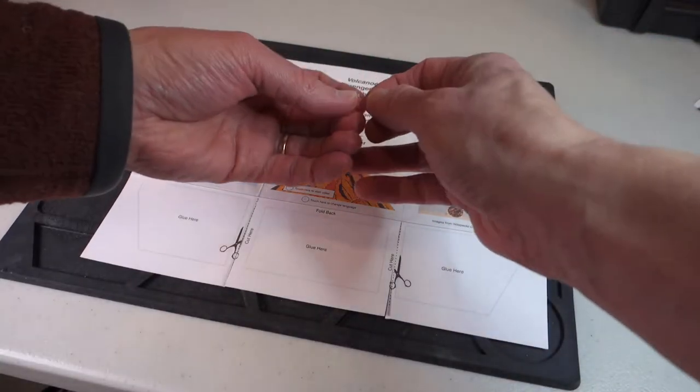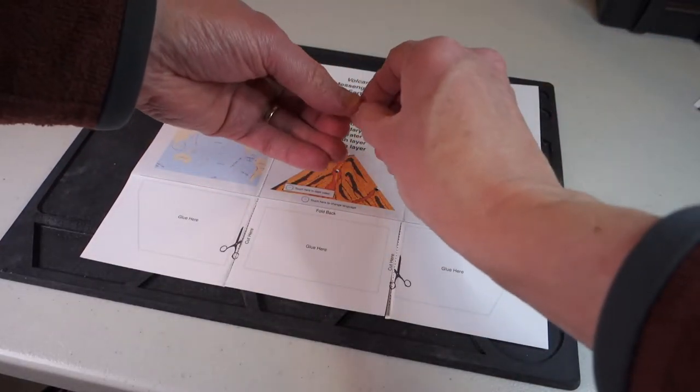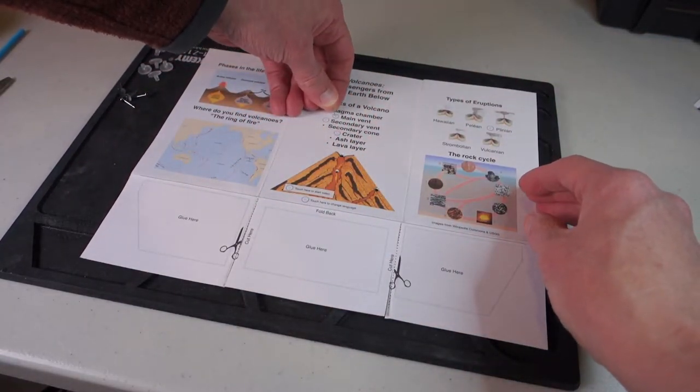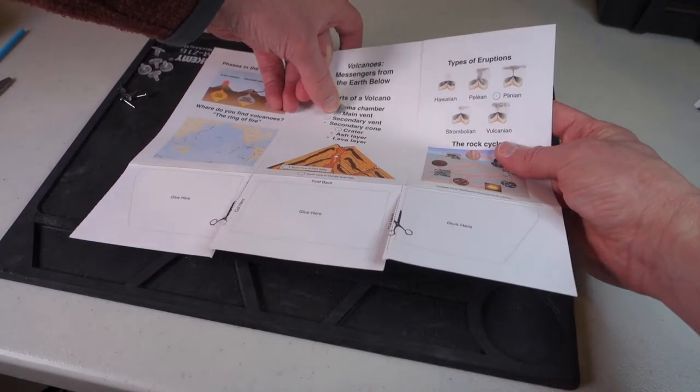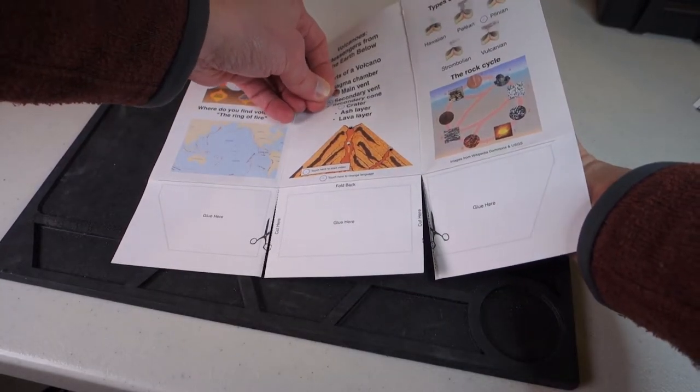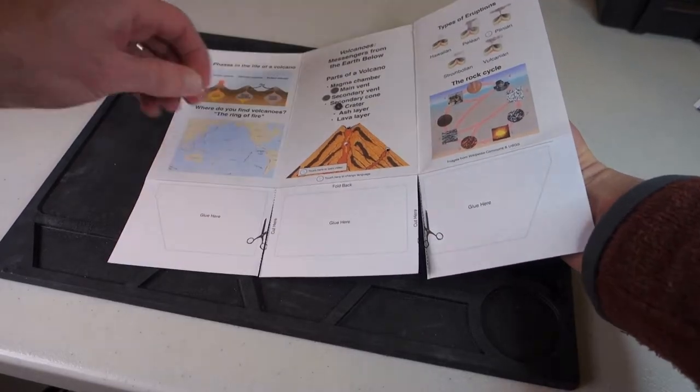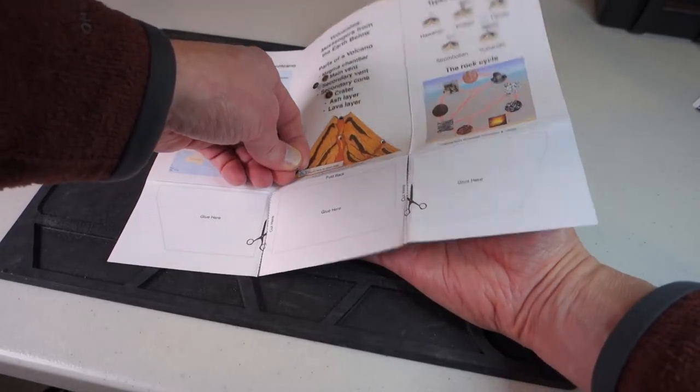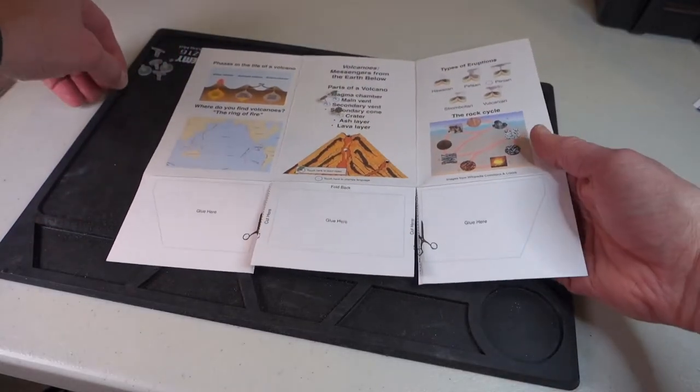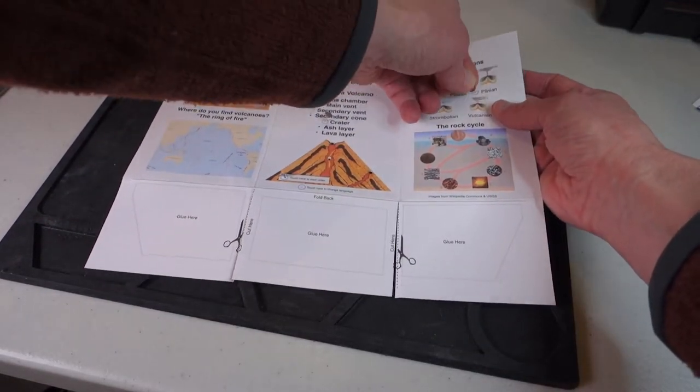Now take your five touch points and poke them through the five locations on the card for the main vent, secondary vent, crater, the video, and finally the Plinian eruption.